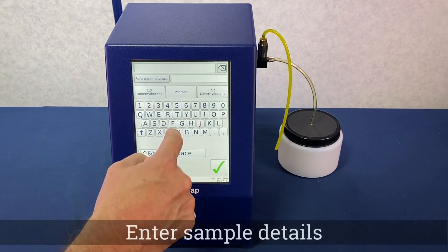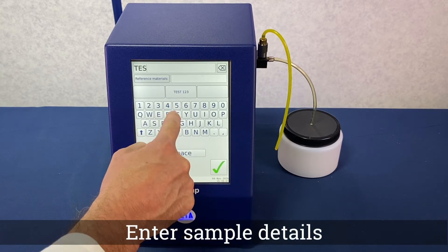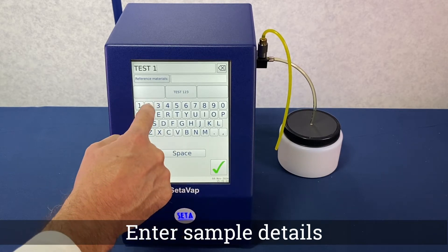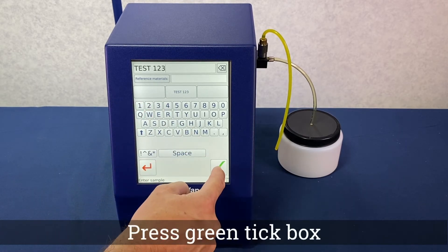Repeat with the sample ID field. Press the green tick to proceed.